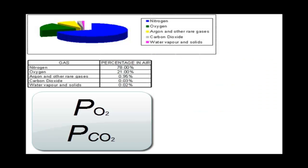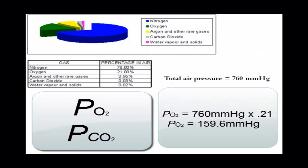We can calculate the partial pressure of oxygen because we know that the percentage of oxygen in normal air is 21%, and we can measure with a barometer the air pressure in the atmosphere. At sea level, atmospheric pressure is approximately 760 millimeters of mercury — the units we use to measure air pressure. Since oxygen is 21% of that, we multiply 760 mmHg by 0.21, which gives us a partial pressure of oxygen of 159.6 millimeters of mercury in the atmosphere at sea level.